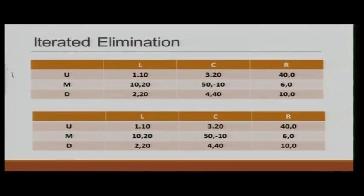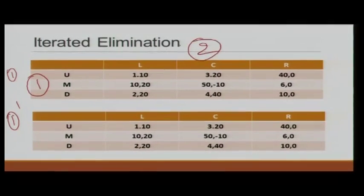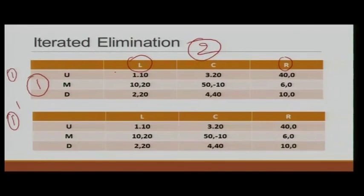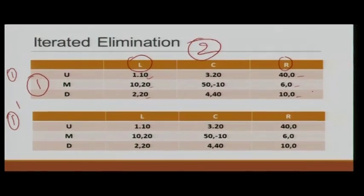Let us take an example game. We have player 1 as the row player and player 2 as the column player. Looking at player 2's actions R and L: 10 > 0, 20 > 0, and 20 > 0 again. So no matter what player 1 is doing, L strictly dominates R — in other words, R is strictly dominated by L.